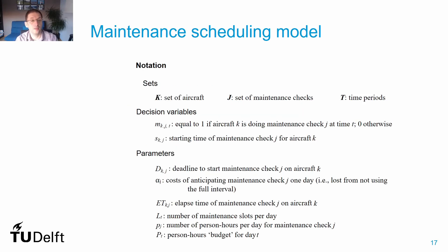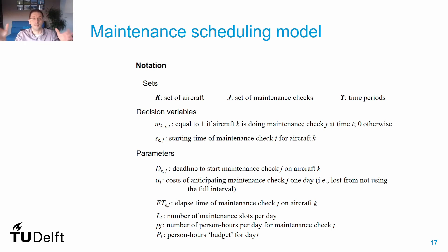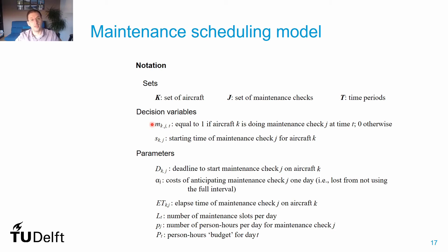In terms of notation, we need three types of sets: a set of aircraft in our fleet, a set of maintenance checks to schedule, and a set of time periods dividing our time horizon. We need two types of decision variables: one defining the starting time of each maintenance check for aircraft k, and a control matrix n_kjt that defines whether aircraft k is performing maintenance check j at time t.